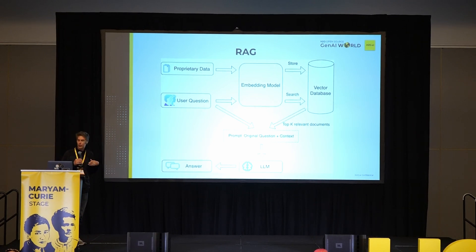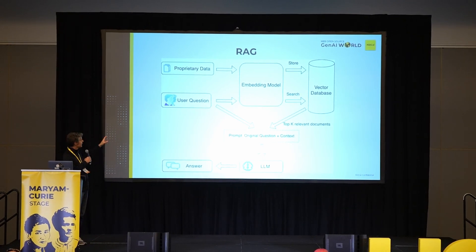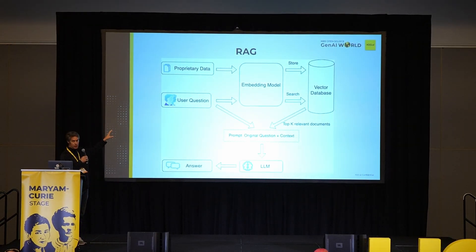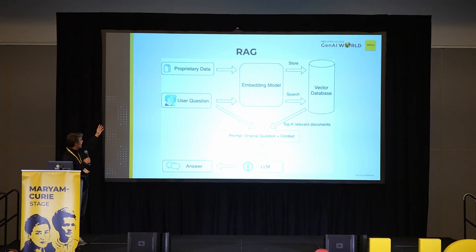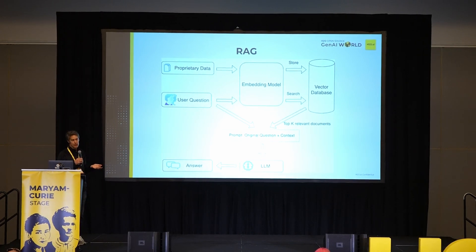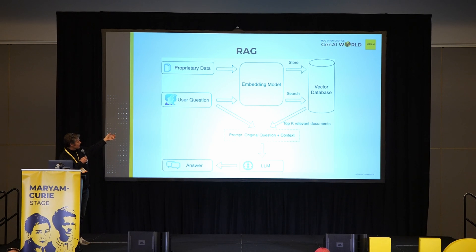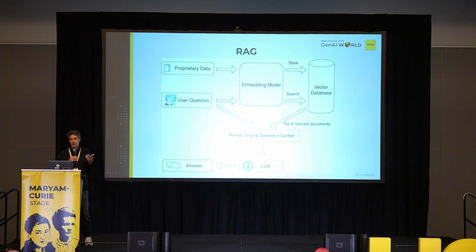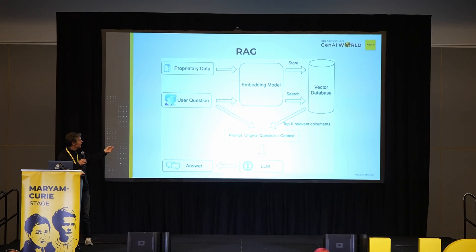Specifically with RAG, what H2O GPT is focused on — this is a generic picture of what that is. You have some data, some question. It goes into some kind of model, like an embedding model, which represents that information in English language as a vector. And then it combines that with the rest of all your data, finds the similarity, and with some kind of extra handling, it might go into the LLM and come back as an answer.